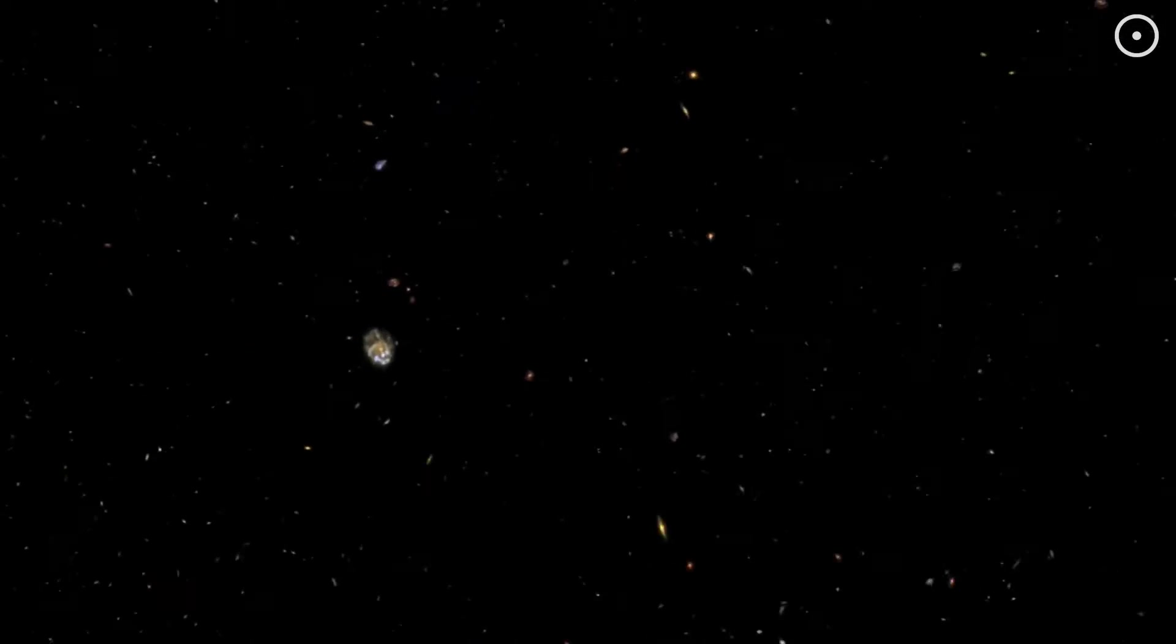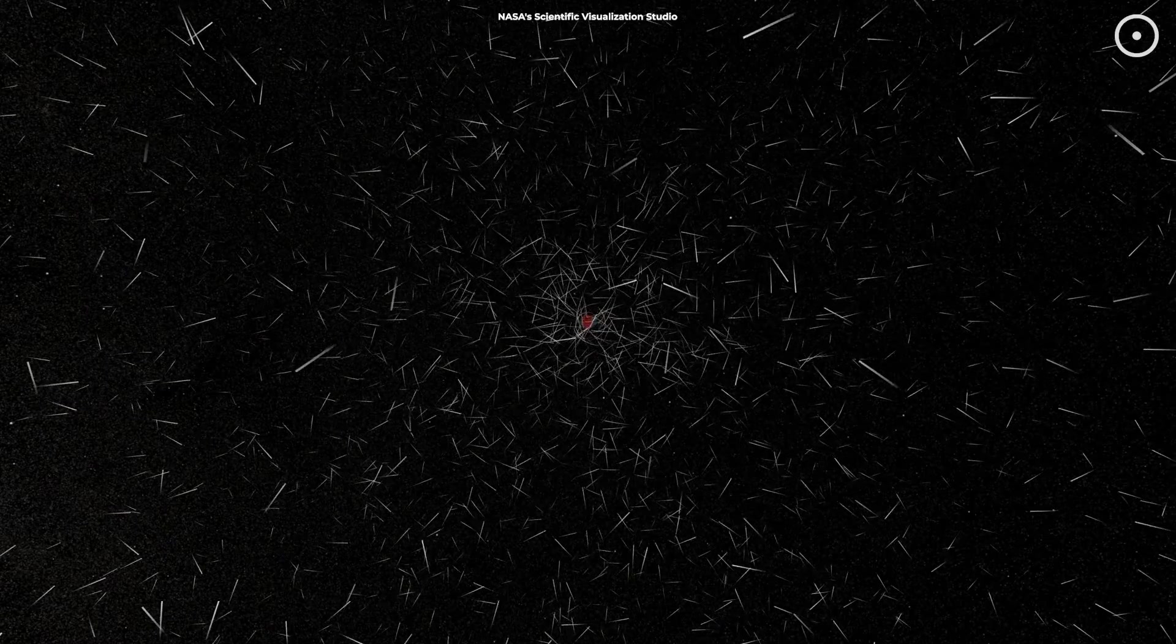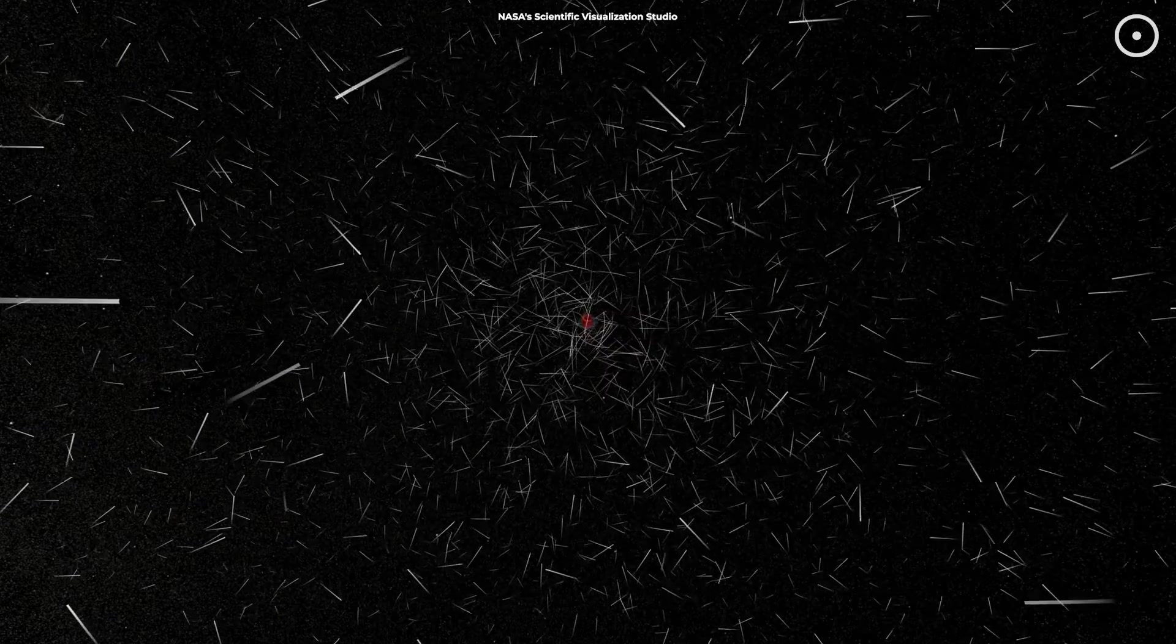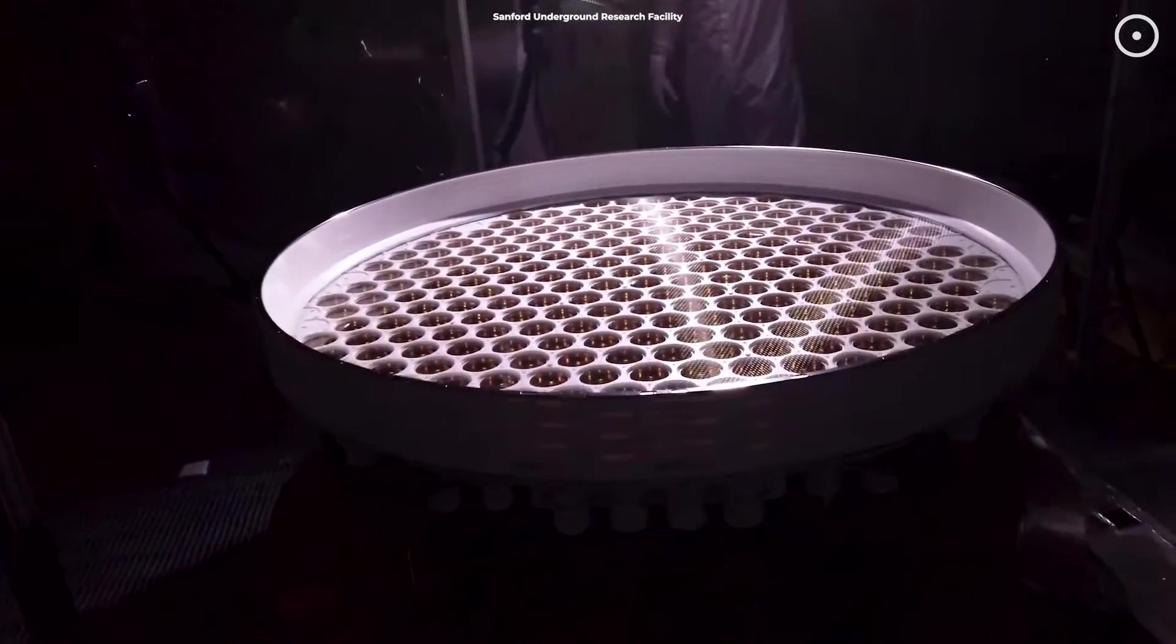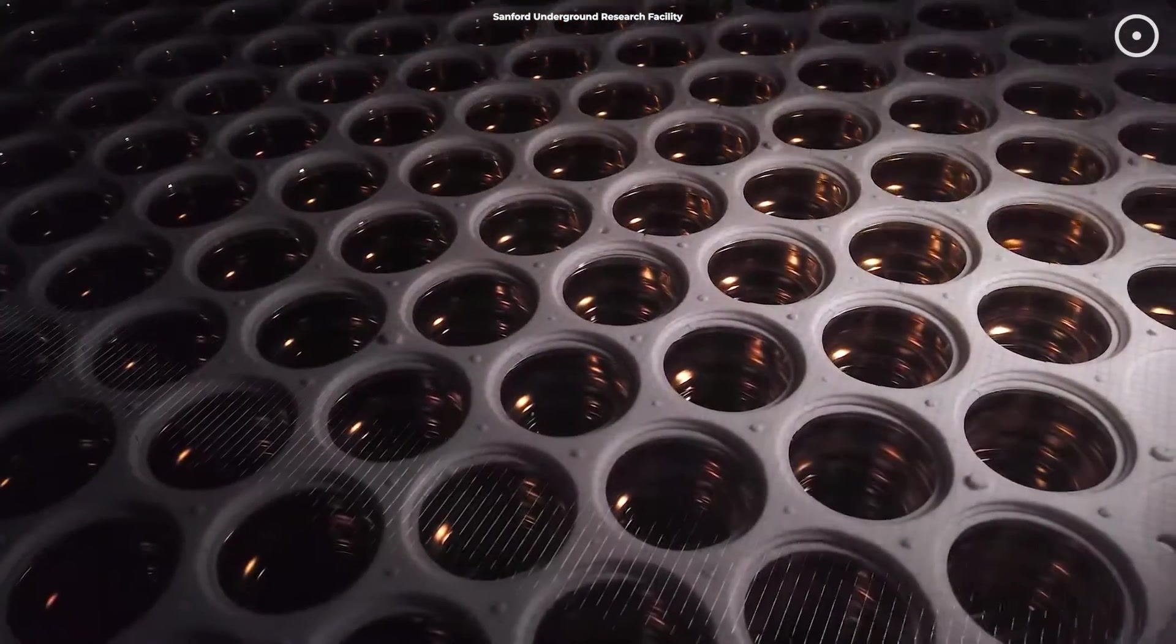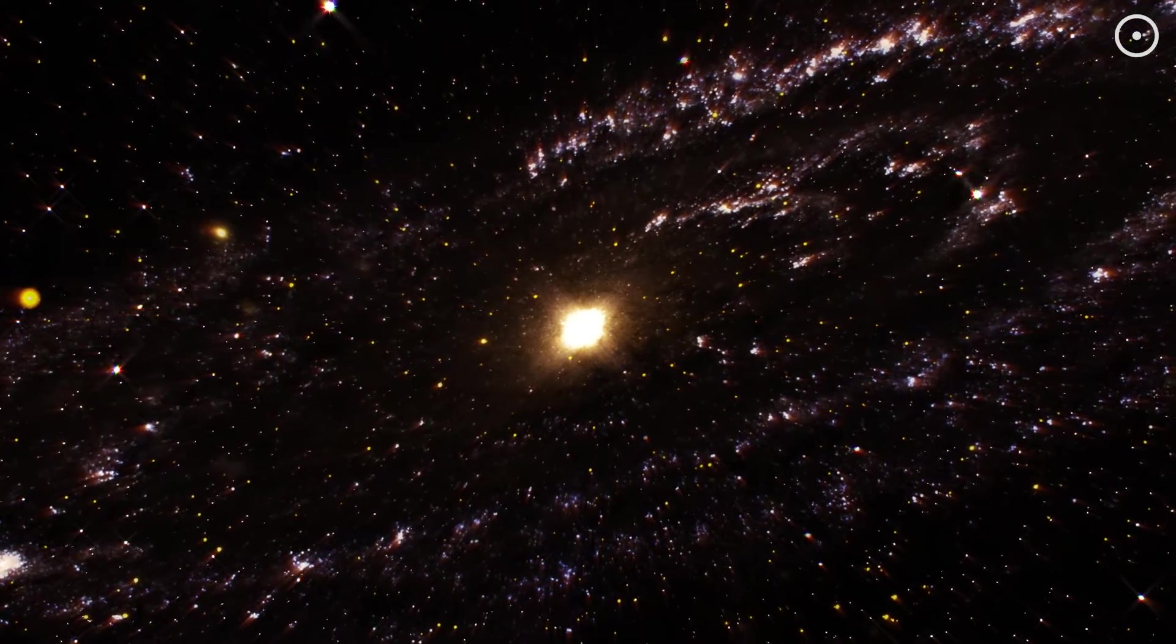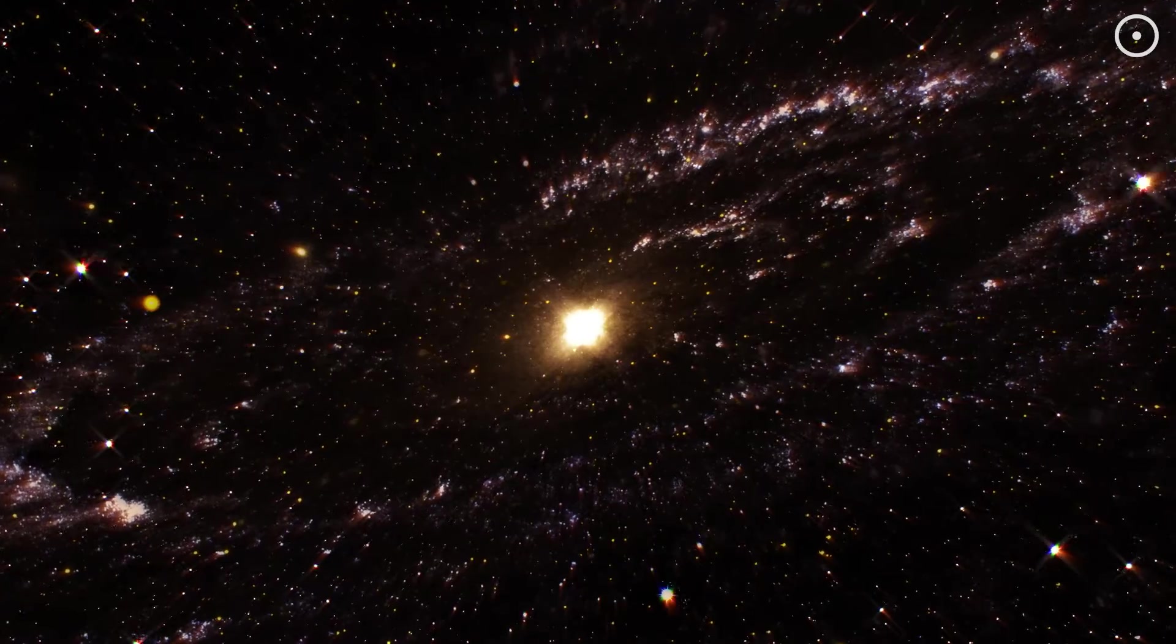So, what is dark matter made of? Scientists have some guesses. They think it could be made of undiscovered particles that don't interact with light. These are totally different from the atoms that make up you, me, and everything we know. Every day, researchers around the world are using special detectors and telescopes to try and catch a glimpse of these mysterious particles. Who knows? Maybe one day, one of you watching this video will be the one to solve the dark matter mystery.